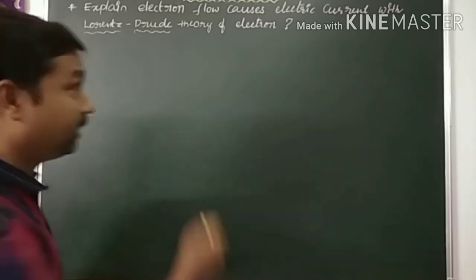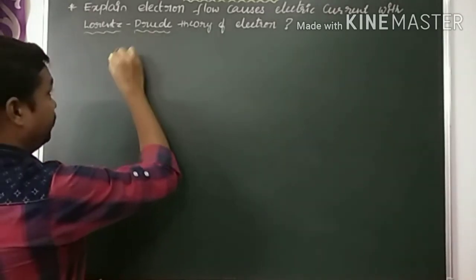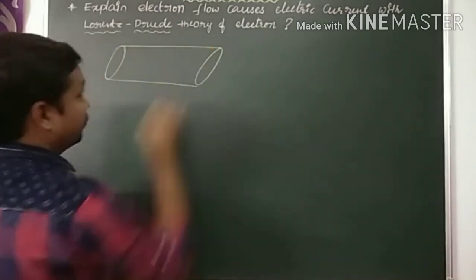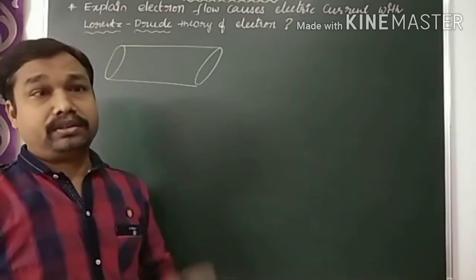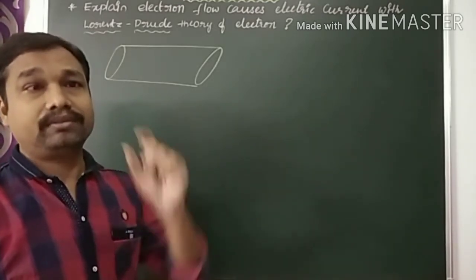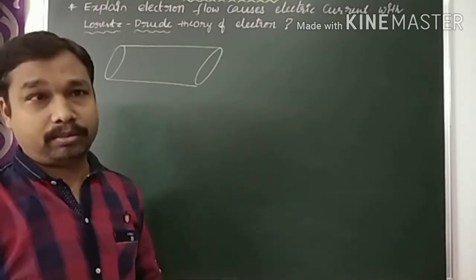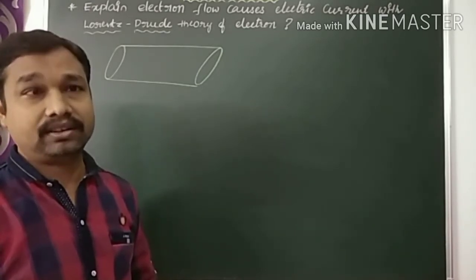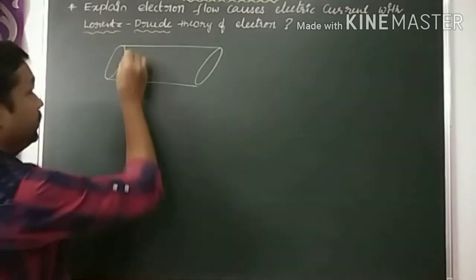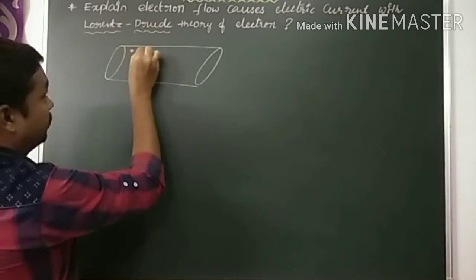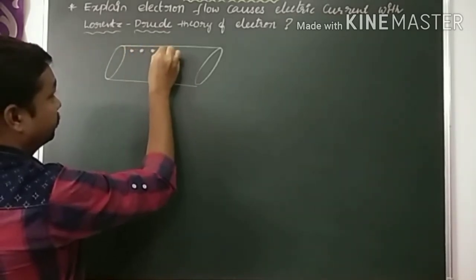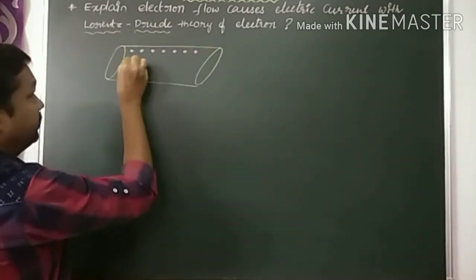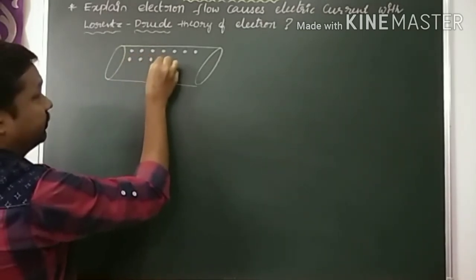Now suppose if you consider a conductor, it has so many atoms. Protons and neutrons exist inside the nucleus. All the protons are fixed in their particular position. The arrangement of protons in a conductor is called a lattice.